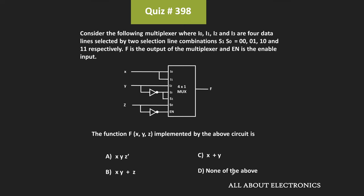Hey friends, welcome to the YouTube channel All About Electronics. So in this question, we have been given a 4×2×1 mux and we have been asked to find the function which is implemented by the given multiplexer. This 4×2×1 mux has 4 data lines and 2 selection lines. Based on the inputs at the selection line, any one of the 4 data lines will get selected. We also have one enable input.